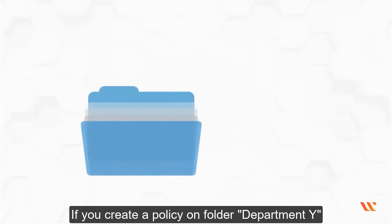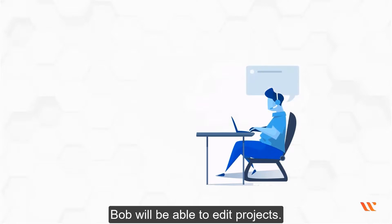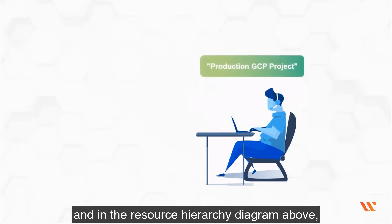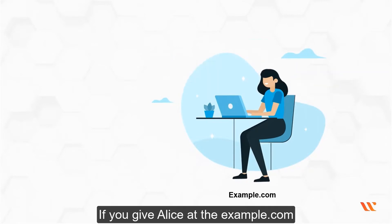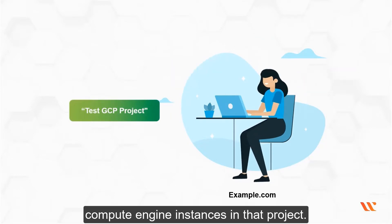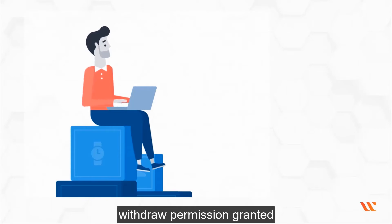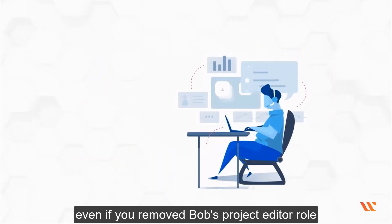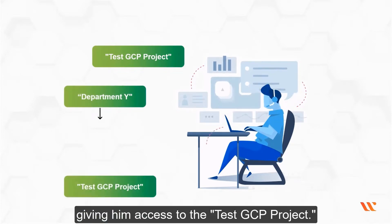For example, if you create a policy on folder Department Y that gives Bob at rateexample.com the project editor role, Bob will be able to edit projects including Dev GCP project, Test GCP project, and Production GCP project in the resource hierarchy. If you give Alice at example.com the instance admin role on the project Test GCP project, she can only manage Compute Engine instances in that project. Roles are always inherited and there is no mechanism to explicitly withdraw permission granted at a higher level for a lower level resource. Even if you removed Bob's project editor role from the Test GCP project, he would still inherit it from the Department Y folder, giving him access to the Test GCP project.